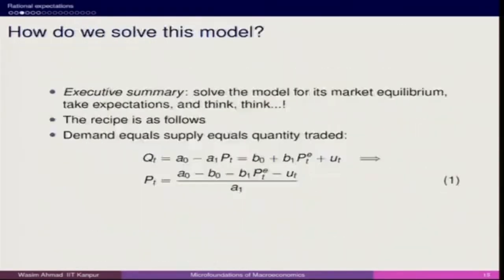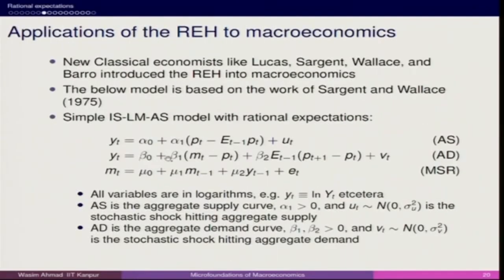We were talking about the new classical argument — how certain frameworks that were used at that time by the Keynesian and new Keynesian school of thought were not very well accepted and were later challenged. Here we have three sets of equations.